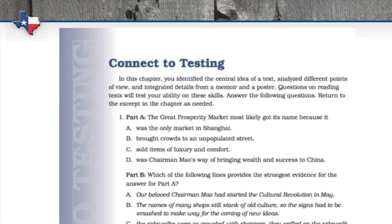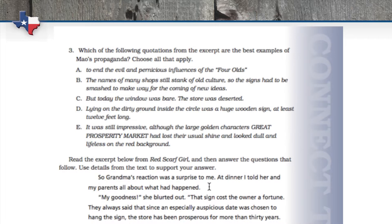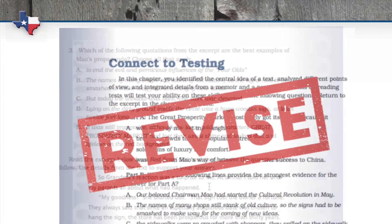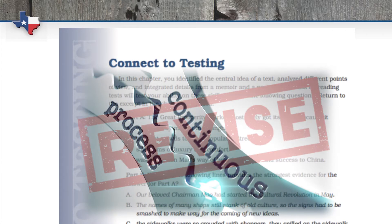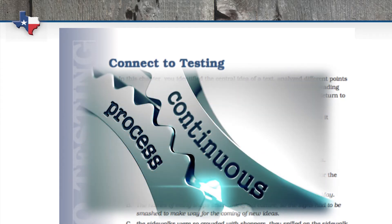What would the student be expected to do with the text? Please note that TEA has not released any information about the format and nature of the new test, but as soon as that information is available, we will be revising the online Connect to Testing. Also, in the coming years, we will be continually aligning and reworking our STAR prep materials after tests are released.